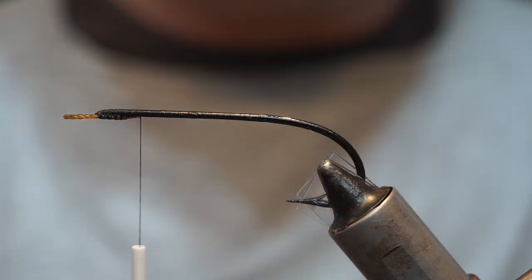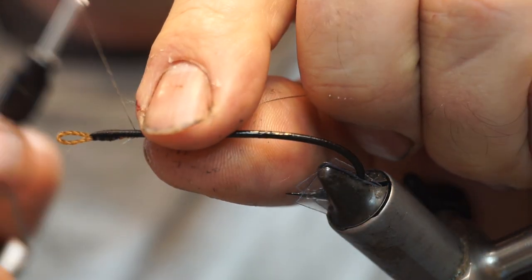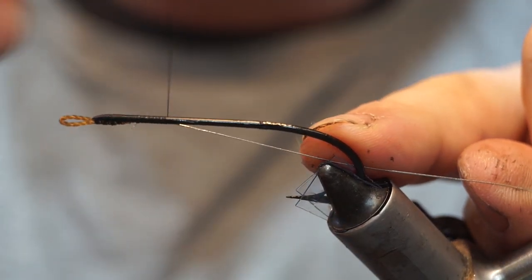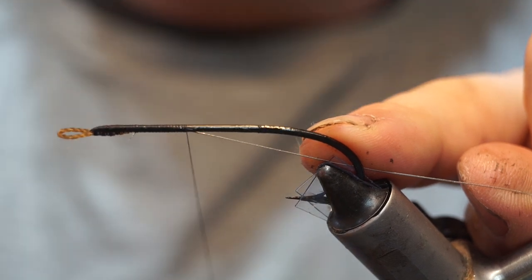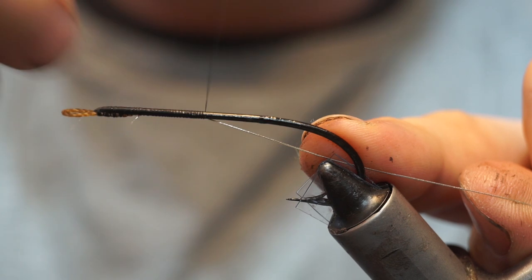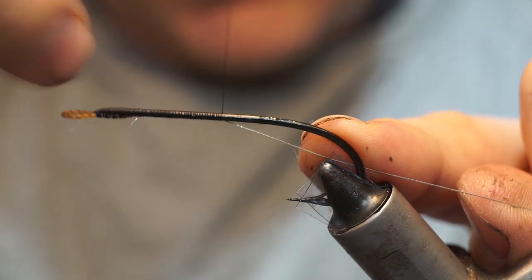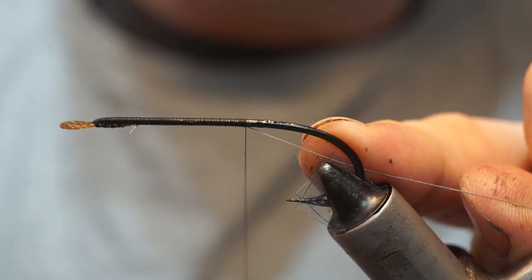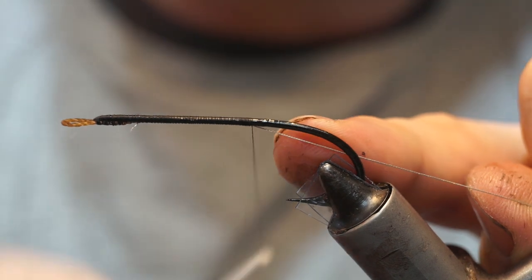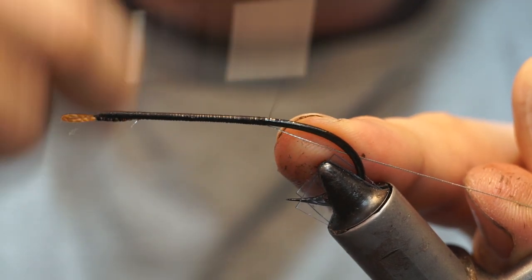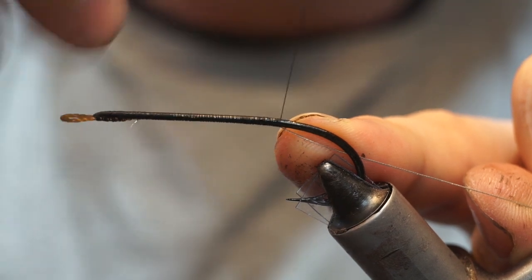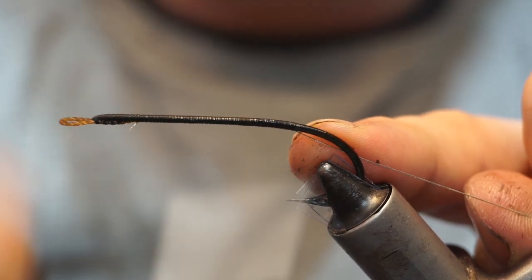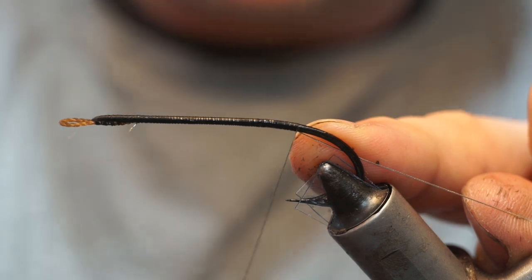You could just do those flat, but some people like, especially when you're tying a bigger fly, to have that continuation of the taper the whole way through. So what I'm going to do is tie on the fine oval silver which is going to form the tip, and I'm doing that with my black tying thread. Use whatever color of tying thread you generally use.